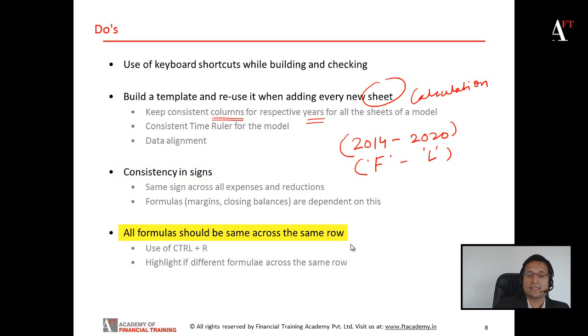All the formulas across the same row in all the columns have to be the same. If they are different, for example, sometimes the first formula could be different, or the formula in the first column could be different, you need to highlight the same.